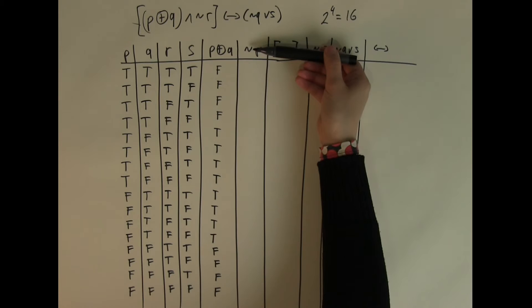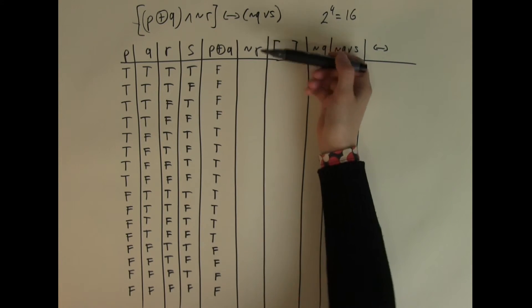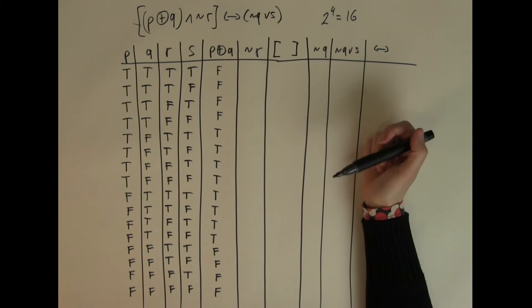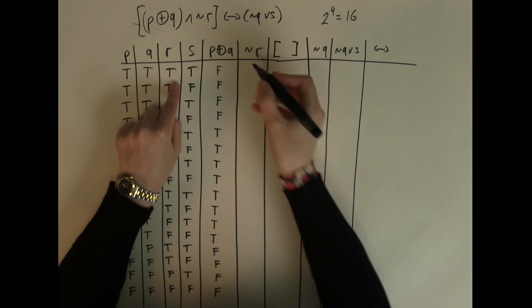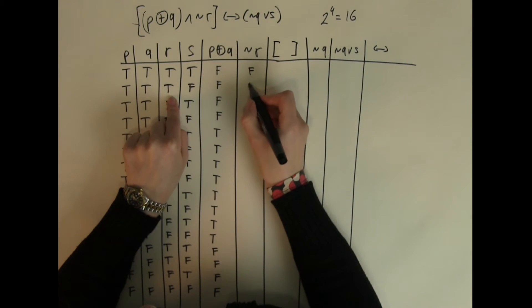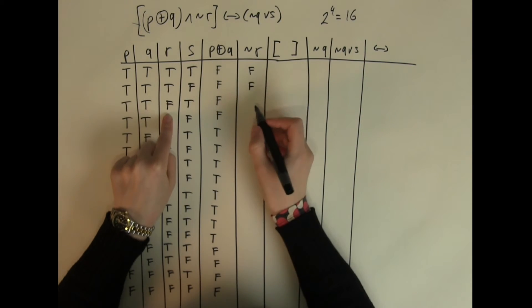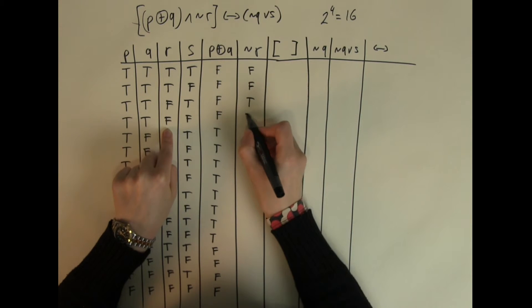The next column is NOT R. Where R is true, NOT R will be false, and where R is false, NOT R will be true.